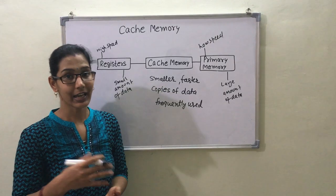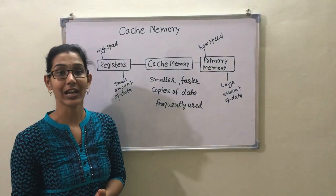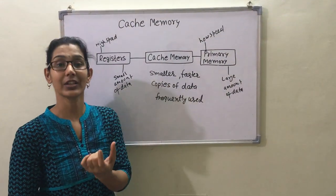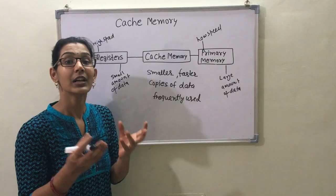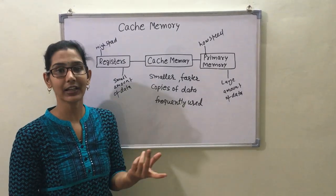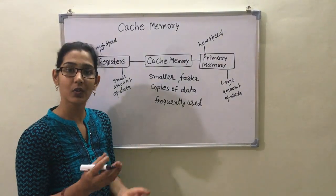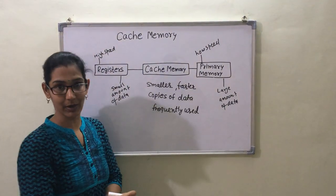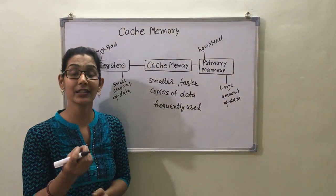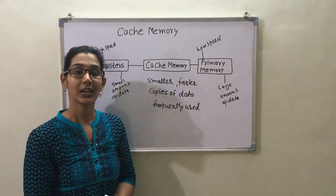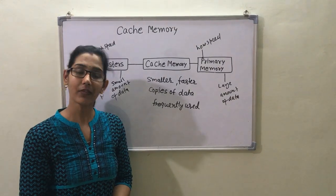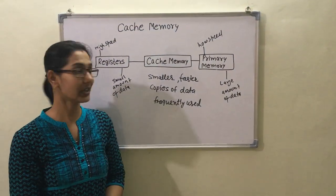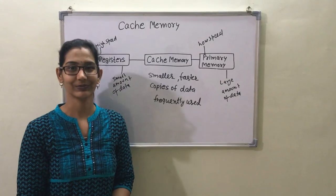For example, in a library we have many books kept in shelves, but we have a reception shelf where we store some books which are frequently used. So the reception shelf is like cache memory. Cache memory has a property called locality of reference. This is the cache memory overview — thank you.